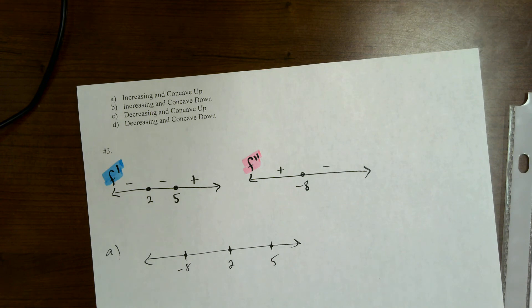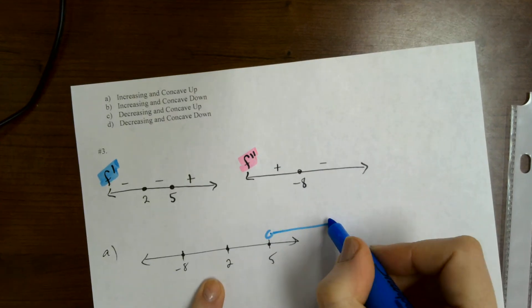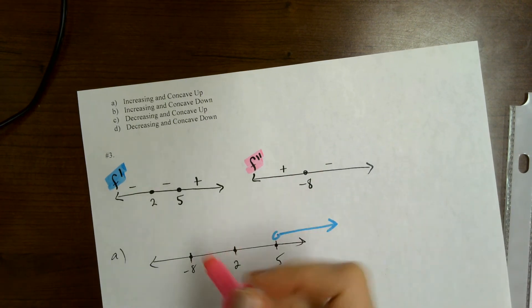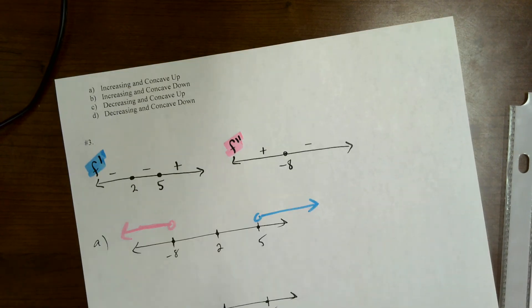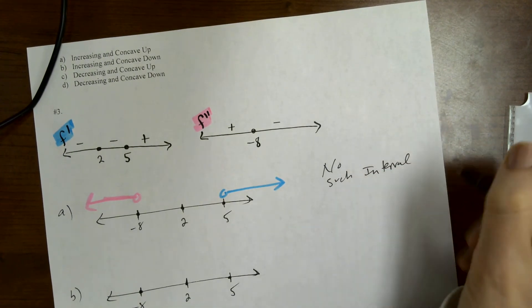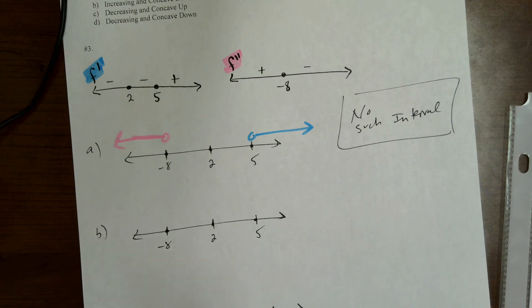Increasing and concave up — so I want F prime positive. F prime positive is here. Concave up — F double prime positive. There is no overlap. So I will say no such interval. There is no part where this original function F is both increasing and concave up.